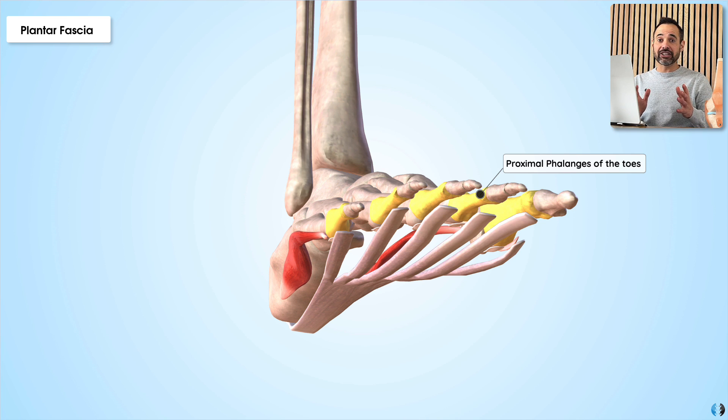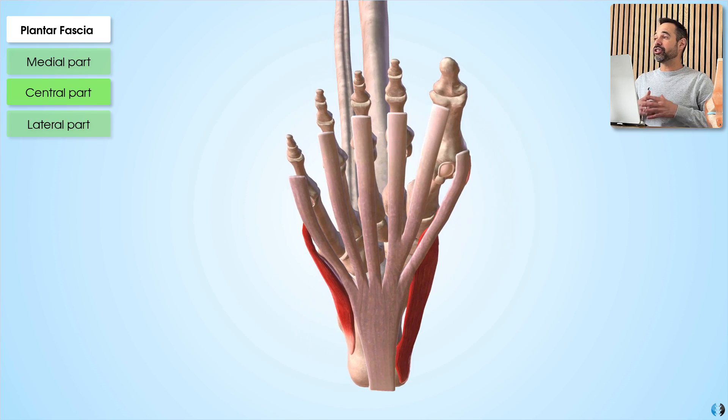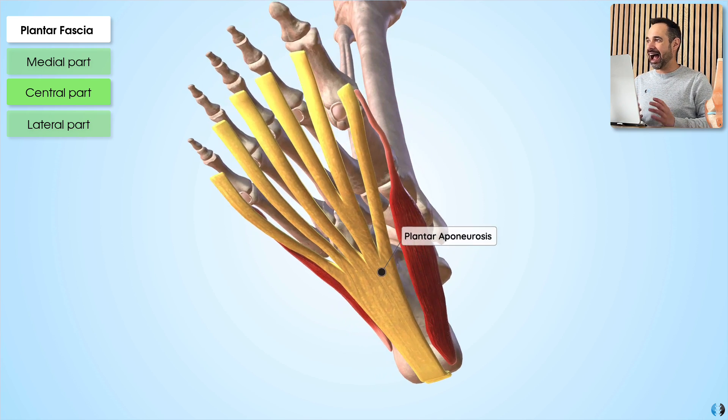Now, the plantar fascia is made up of three specific portions: a medial portion, a central portion, and a lateral portion. The central portion is perhaps the most important part, which is suggested to be the thickest bit, and is sometimes referred to as the plantar aponeurosis.